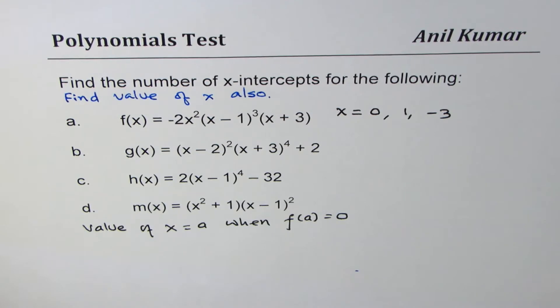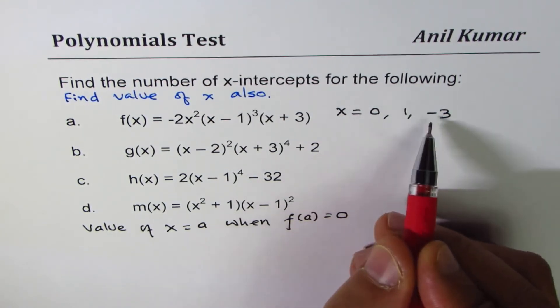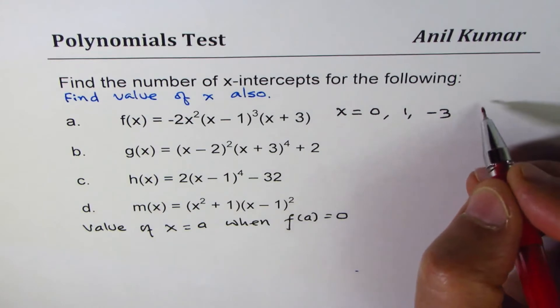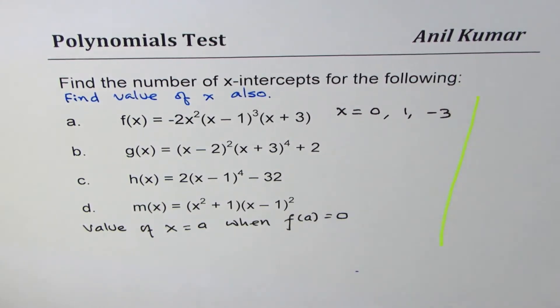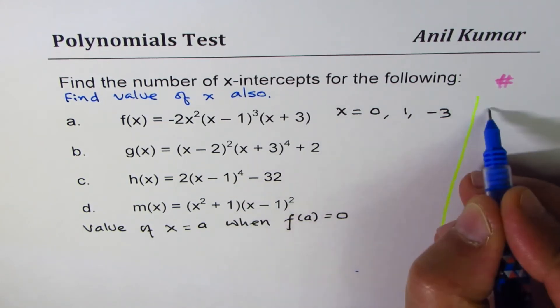So these are the three x-intercepts. We have x-intercepts at 0, 1, and minus 3. And how many are there? So let me make a column for that. So we'll write a number in this column. The number of x-intercepts are 3.